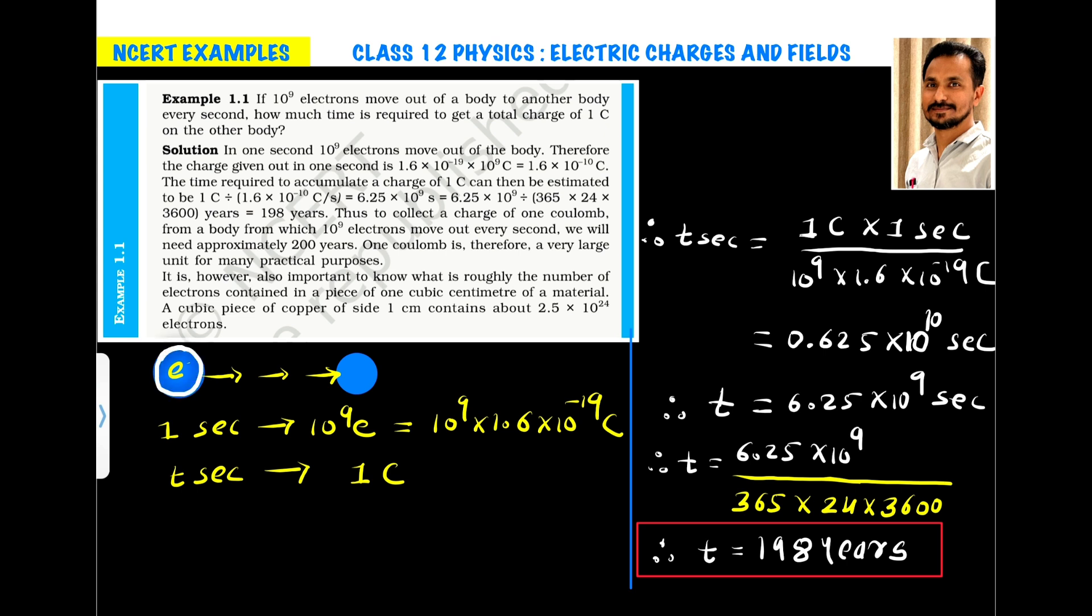So, let us assume we have this body. And from this body, every second, that is in 1 second, 10 raised to 9 electrons transfer to this body. Now, when 1 electron transfers, it carries a charge of 1.6 into 10 raised to minus 19 coulomb.